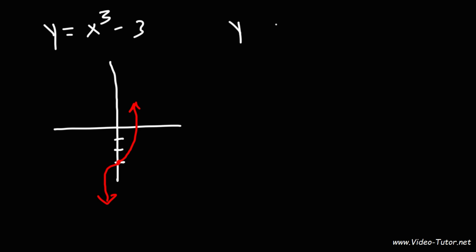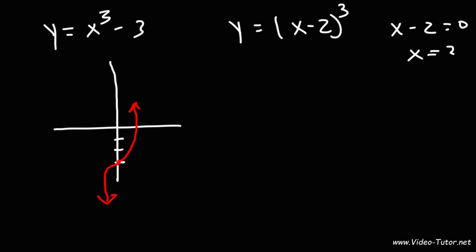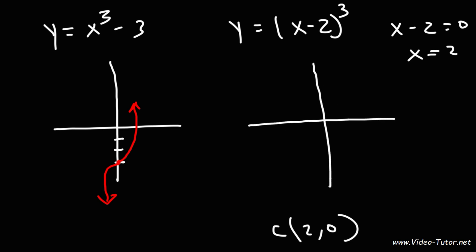What about y is equal to x minus 2 raised to the third power? In this case, the graph is going to shift 2 units to the right. If you set the inside equal to 0 and solve for x, you'll get x is equal to 2. So the x-coordinate of the center is going to be 2, and the full coordinates of the center are (2, 0). We still have an increasing function, so we'll have the same general shape.